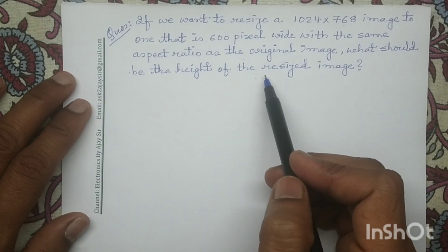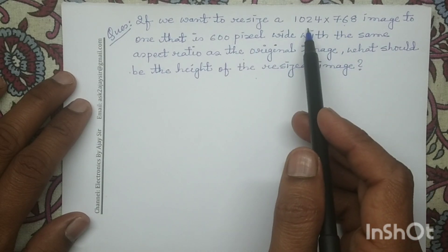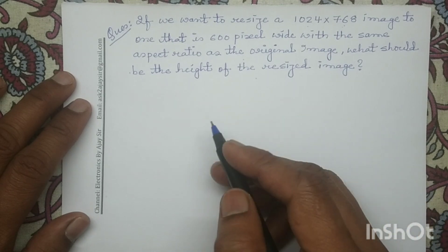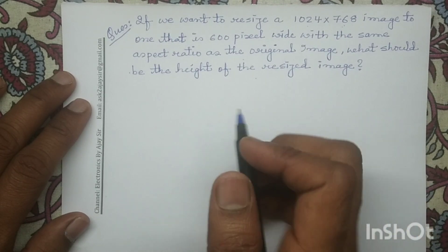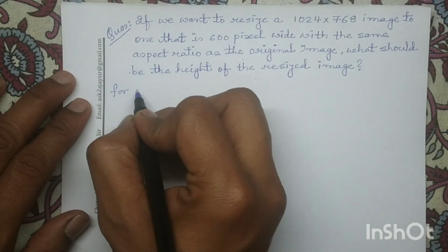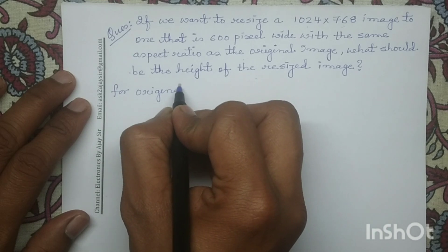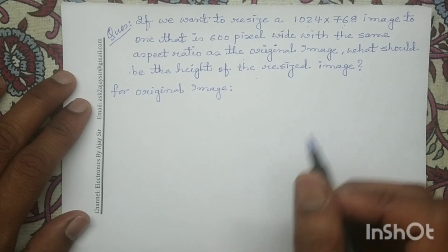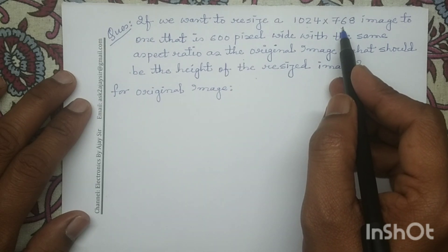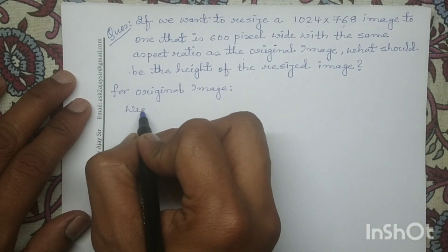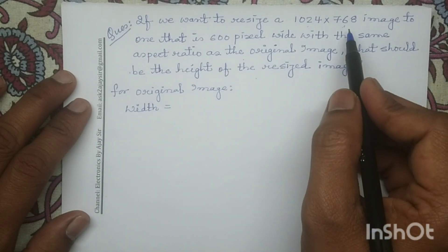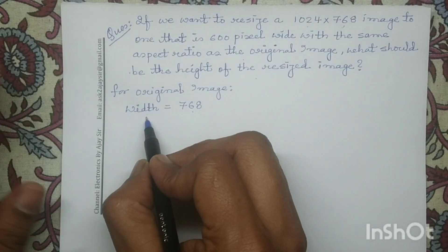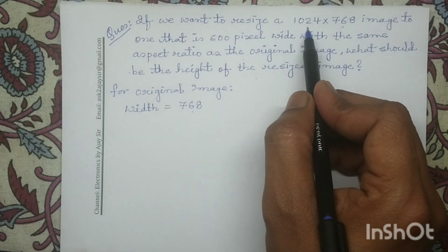First, for this original image we will determine what is the aspect ratio. In this image dimension, the number of rows is 1024 and the number of columns is 768. The number of columns in an image represents the width, and the number of rows represents the height. So the width of the original image is 768 and the height of the original image is 1024.